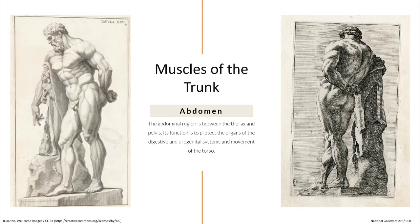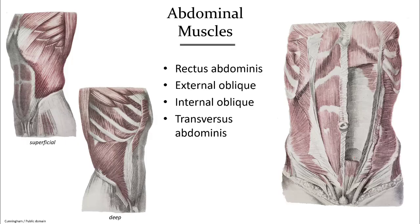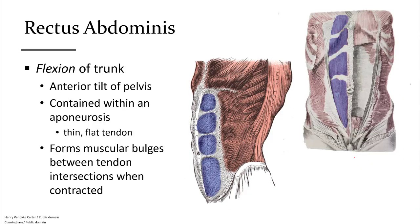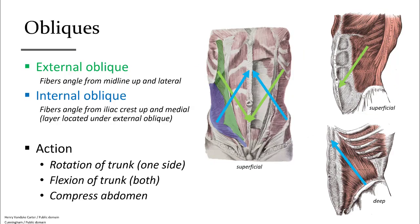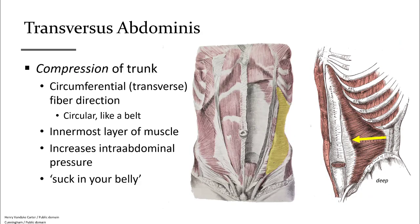Moving on to the muscles of the trunk, starting with the abdomen — four muscles will be discussed. The rectus abdominis, also known as the six-pack muscle, is made of muscle segments embedded in a wide aponeurosis. It causes flexion of the torso. There are two oblique muscles: the external oblique has a fiber orientation like a V, and the internal oblique has the opposite orientation like an A. Together they can turn the torso or flex it. The deepest of the four is the transversus abdominis, which helps you suck in your belly as if tightening a belt.